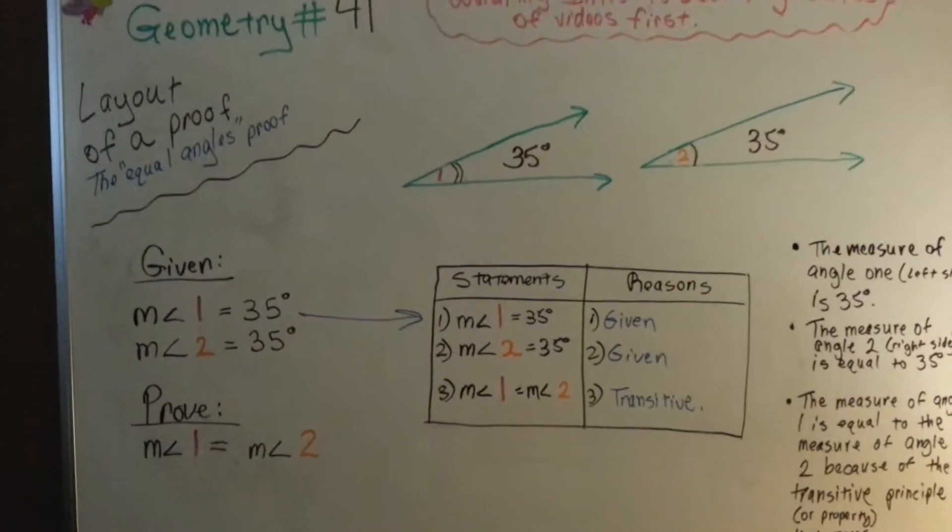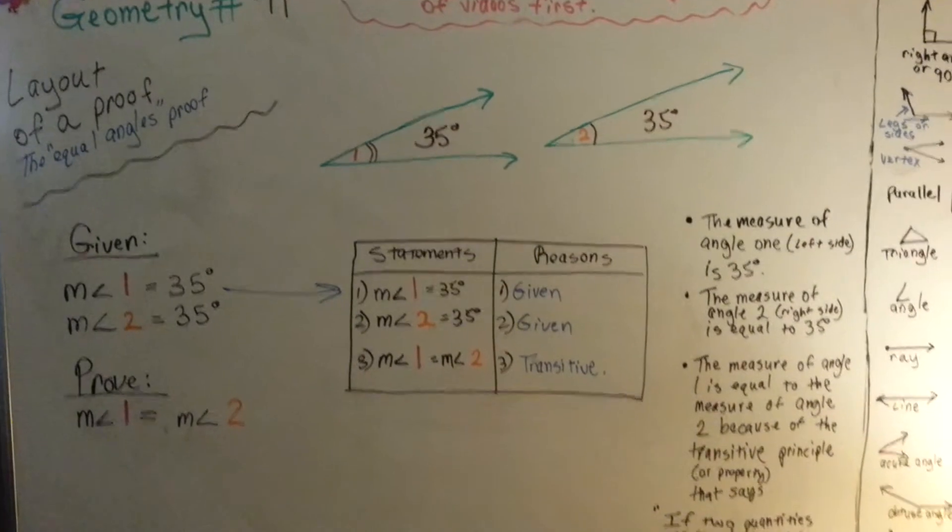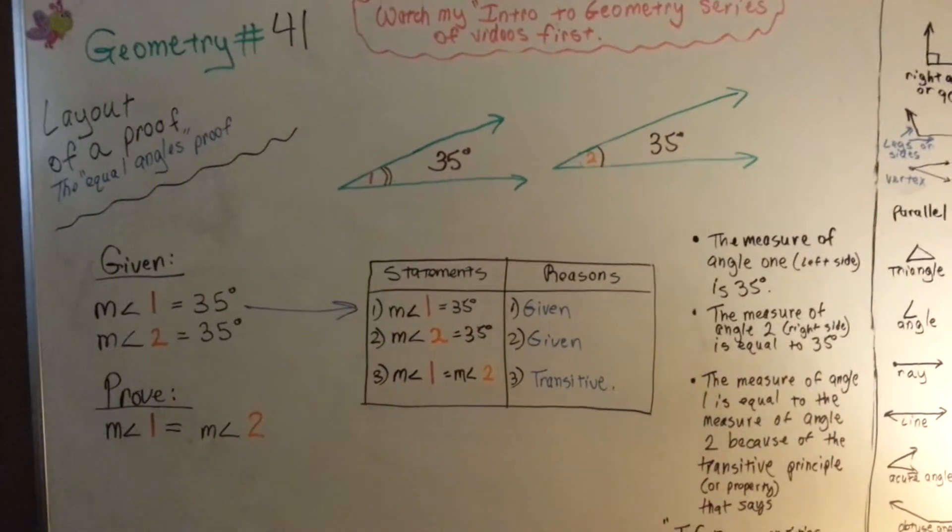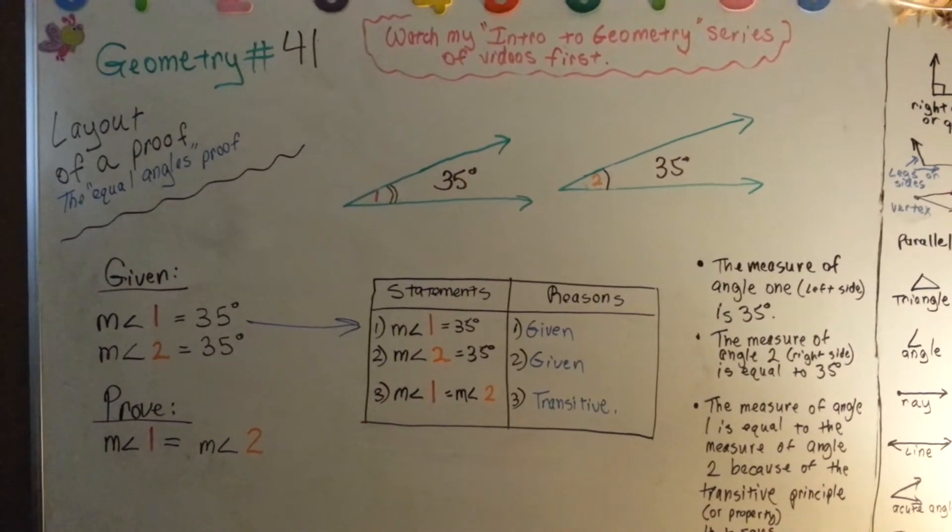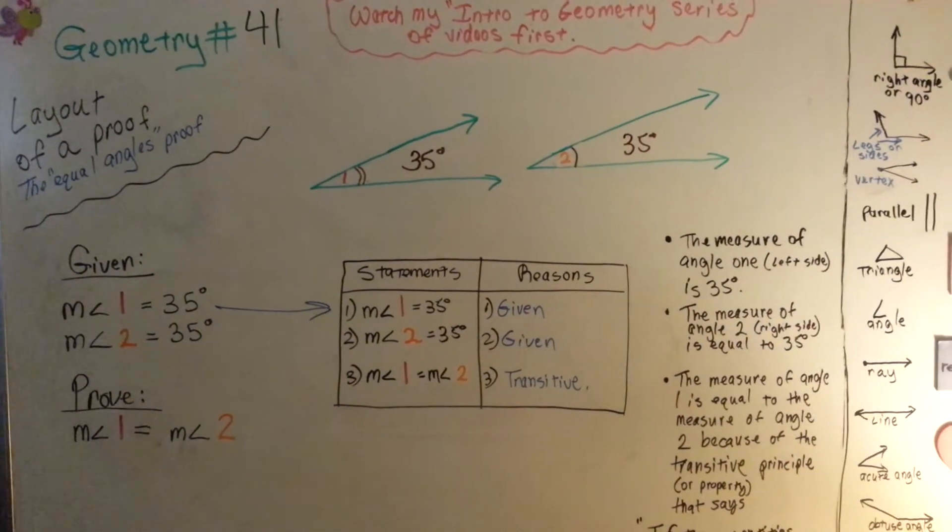That's how you do the layout of a proof for an equal angles proof. We're going to do another one in our next video, number 42. I'm going to do a layout of a proof of an angle bisector proof. See you next video!